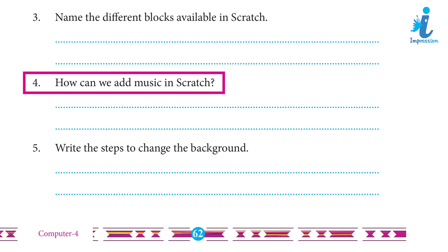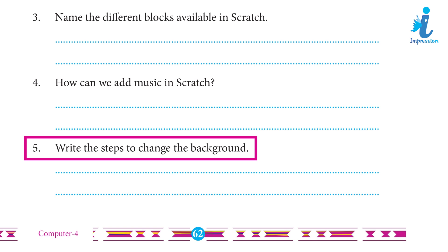4. How can we add music in Scratch? — Answer: Step 1: Click the Sound block. Step 2: Select 'Play Sound Meow Until Done' and drag this block and place it under the script palette. Step 3: Run the code by clicking on the blocks in the script area. Step 4: To stop all sounds being played on all sprites, use the 'Stop All Sounds' block. 5. Write the steps to change the background — Answer: Step 1: Click on the 'Choose a Backdrop' button. Step 2: A 'Choose a Backdrop' window appears. Step 3: From the preview list, select the Blue Sky backdrop — the Blue Sky backdrop will be added as the background of the sprite.